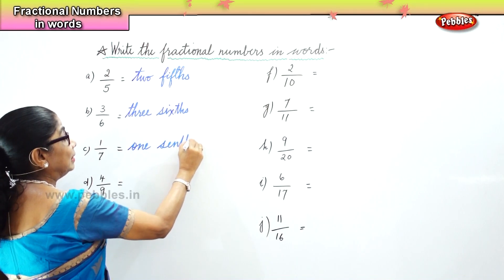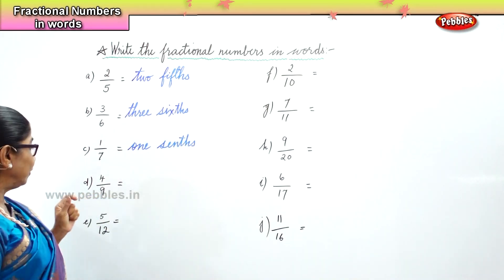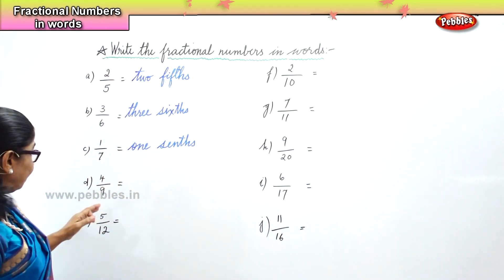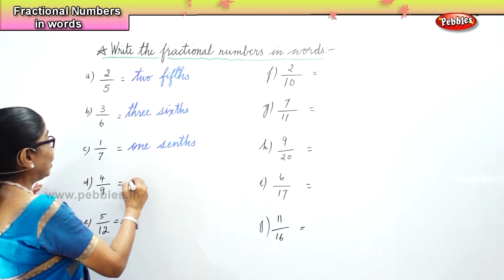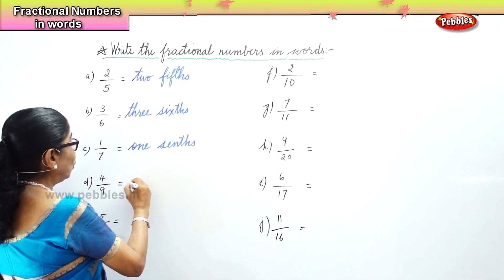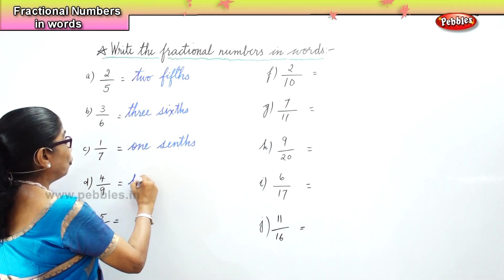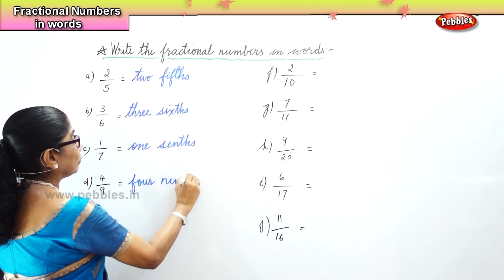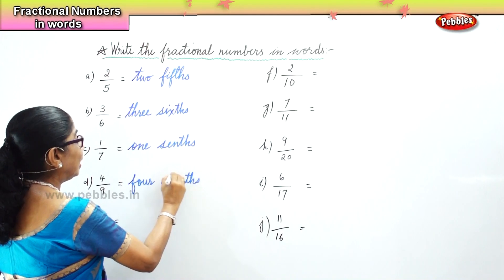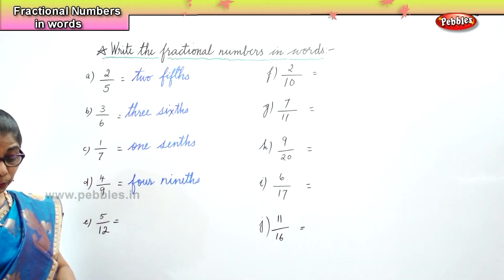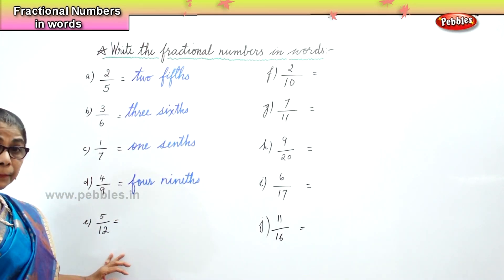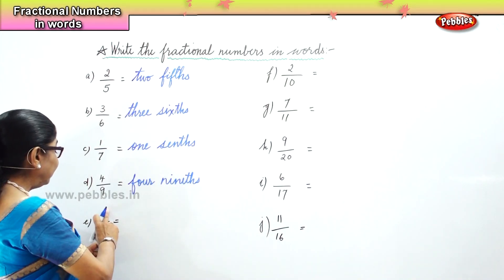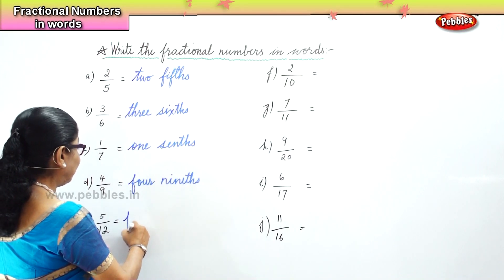One part out of seven parts — one seventh. Next we have four parts out of nine parts, 4 by 9, so you will write it as four ninths. Very good, four ninths. Then we have five parts out of twelve parts, 5 by 12 — you will write five twelfths.